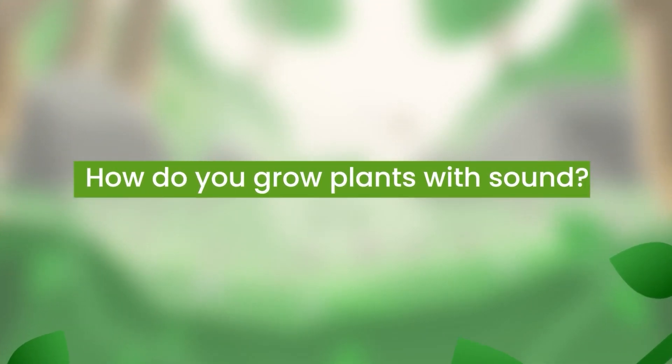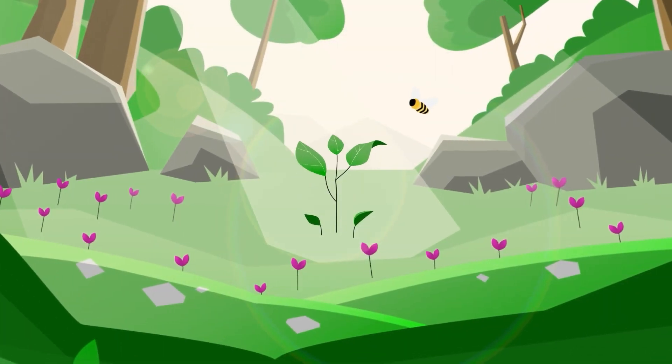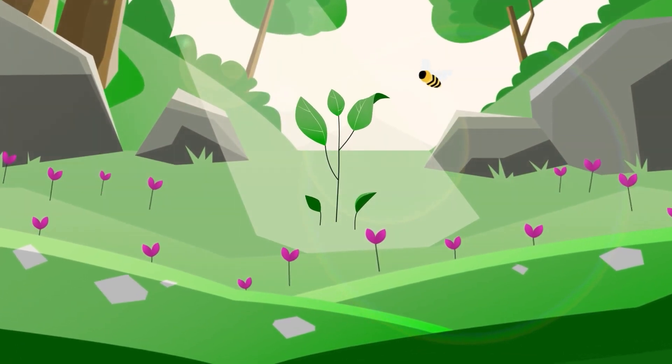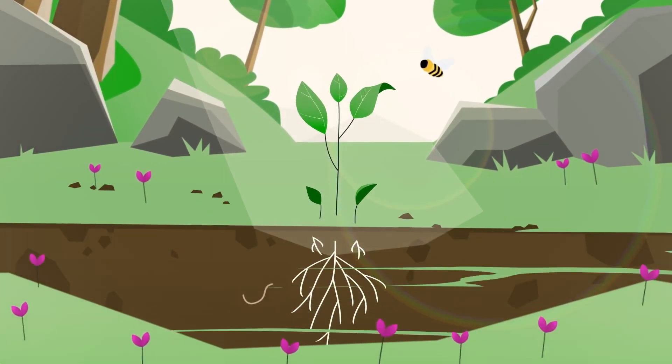How do you grow plants with sound? In nature, plants mostly get their energy from the sun, carbon from the air, and absorb water, oxygen, and nutrients through their roots in the soil.